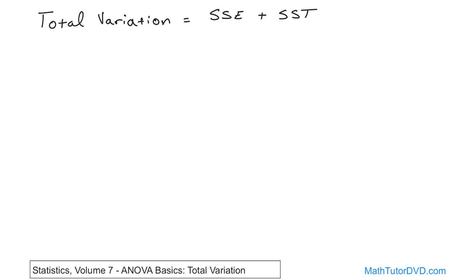So in order to calculate it for our particular problem, it's going to be the sum of squares of errors that we've calculated is 113.4, and the sum of squares among treatments is 24.066667. I know I'm carrying a lot of decimals. And so the total variation, you can abbreviate it TV or just write it out, for this problem is 137.4666667.